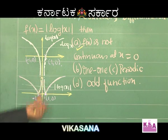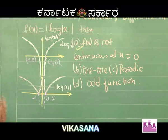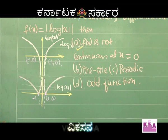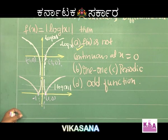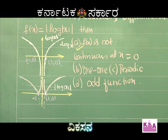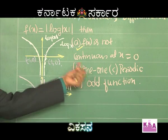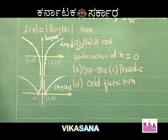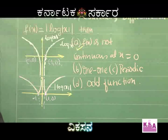Looking at this graph, the y-axis is dividing the graph into two equal parts — so this function is an even function. You should understand the graph of |log|x||, and apart from that you must understand these words. I hope dear students you have got sufficient information about odd functions, even functions, one-one, many-one, periodic, and non-periodic functions. Now let us move on to the next set of problems.